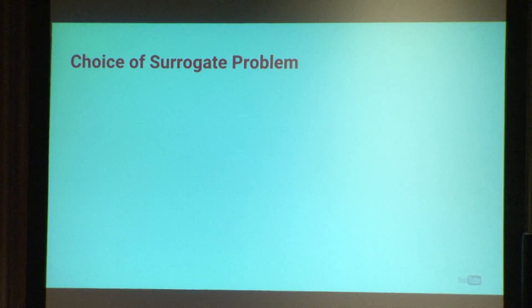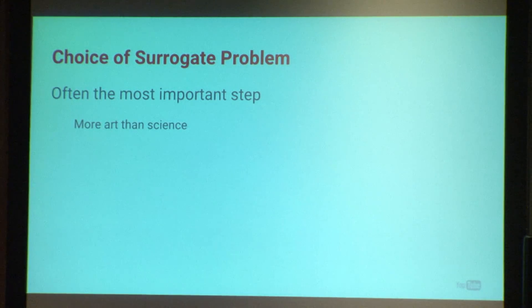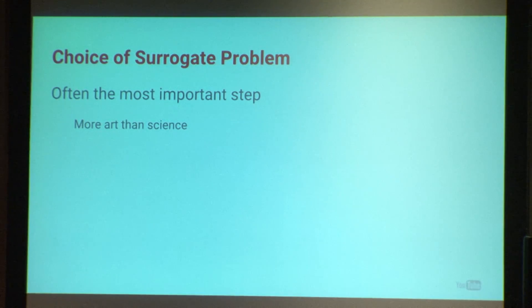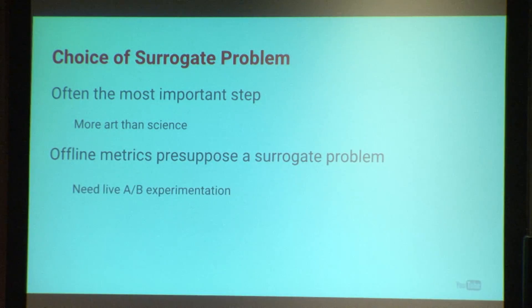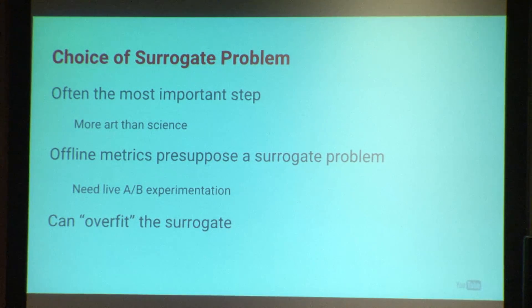Talking about candidate generation, we have this notion of a surrogate problem. The end goal is great recommendations that users engage with and fall in love with your product, but first you have to define a machine learning problem — maybe you want to predict item ratings. Most offline metrics already presuppose a surrogate problem, so if you're reducing RMSE on item ratings, there's no way to evaluate if that was the right choice. We haven't come up with a great way other than just live AB experimentation in the product. We've also observed that you can overfit the surrogate problem — you keep reducing your error rate offline, but then you push it to a live experiment and the results are worse. That's a terrible situation to be in.